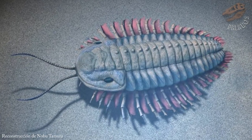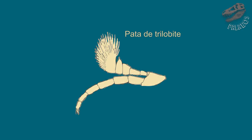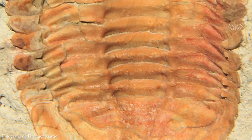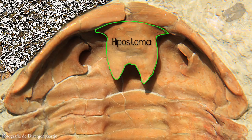Las patas birramias significan que en vez de tener una única pata por segmento portaban dos, o mejor dicho, la pata estaba dividida en dos. La parte ambulatoria o caminadora, llamada exopodio, con segmentos típicos de la pata de un artrópodo, y una usualmente filamentosa denominada endopodio, que servía para nadar y respirar, pues se piensa que estos filamentos eran las branquias de los trilobites. Finalmente, todos los trilobites poseían una placa que cubría la boca llamada hipostoma, cuya forma da pistas sobre el tipo de dieta del portador.